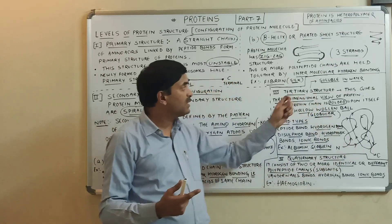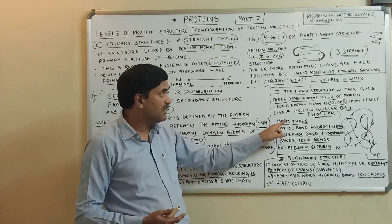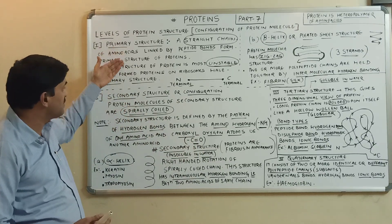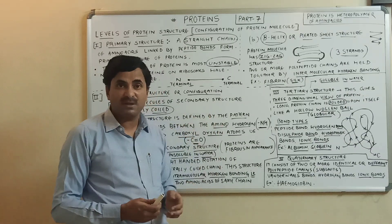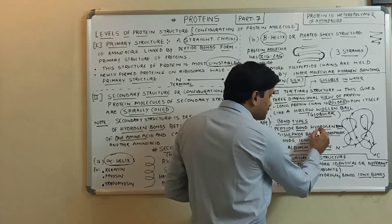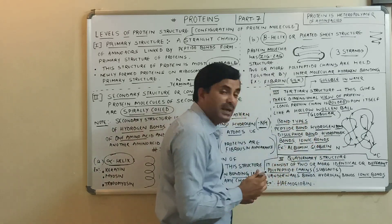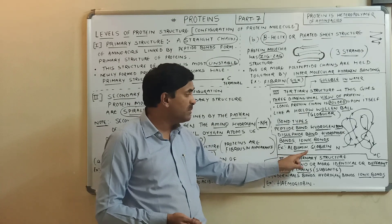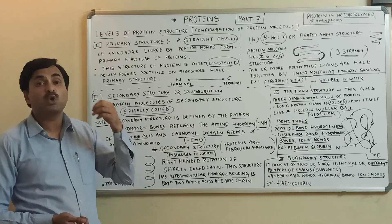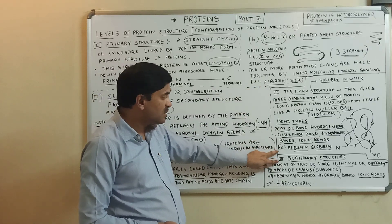The tertiary structure is more stable than the primary and secondary structures because it has many types of bonds: peptide bonds, hydrogen bonds, disulfide bonds, hydrophobic bonds, ionic bonds, etc. Examples include albumin, globulin, and globin — these common proteins represent the tertiary structure.